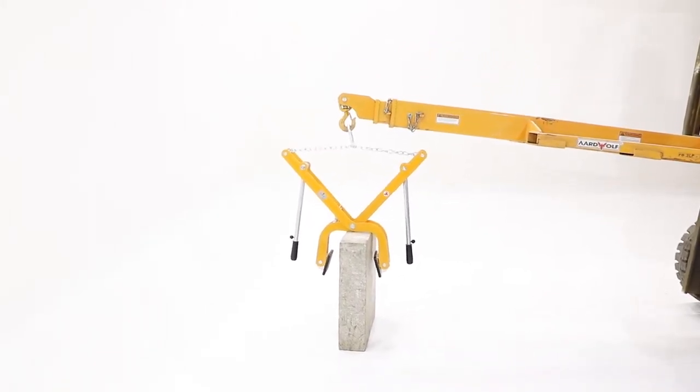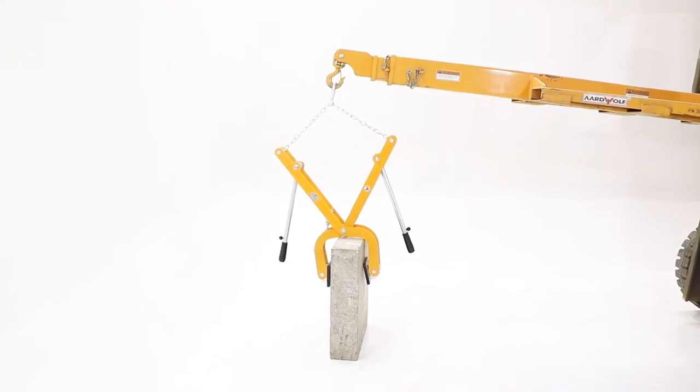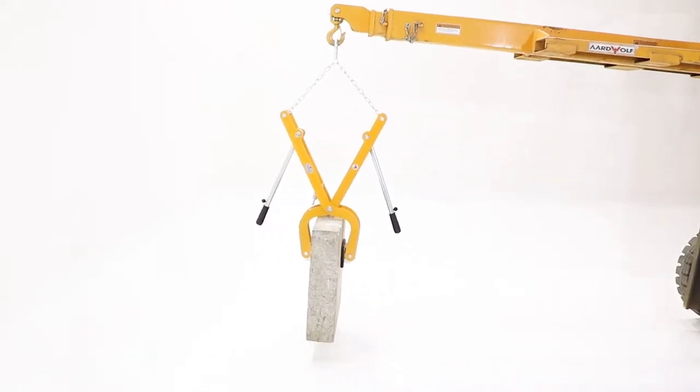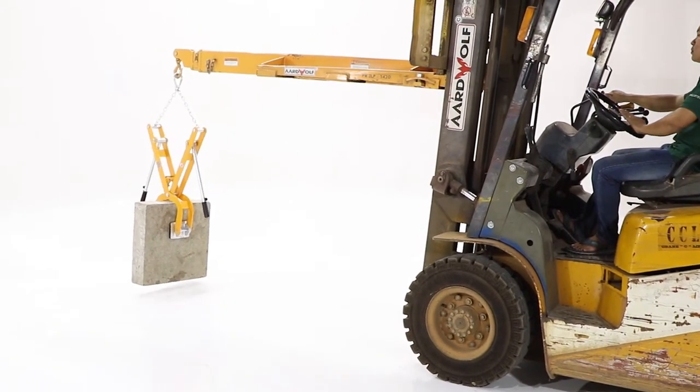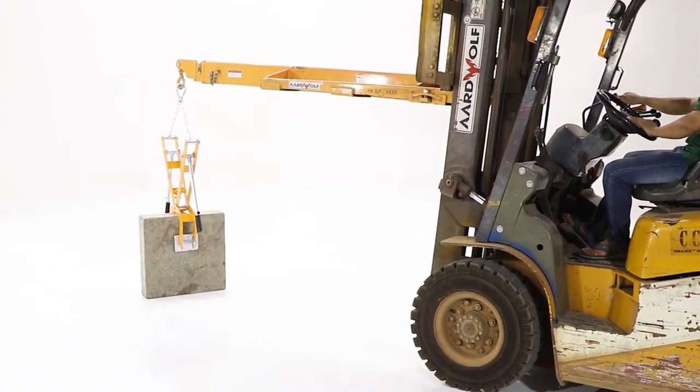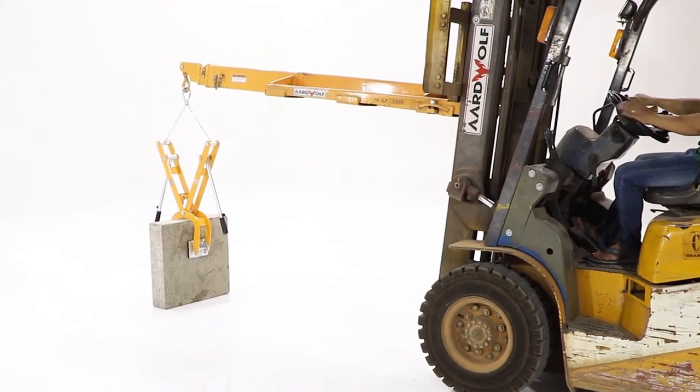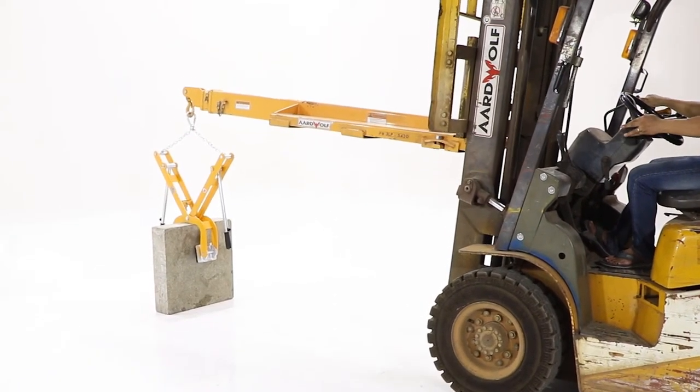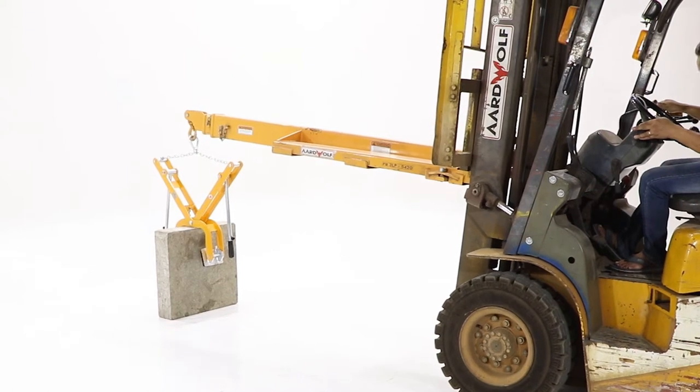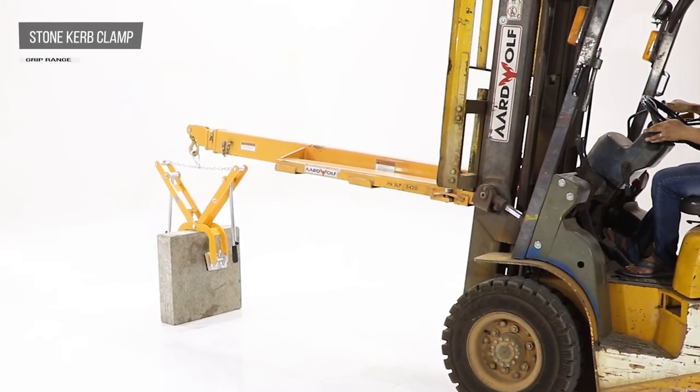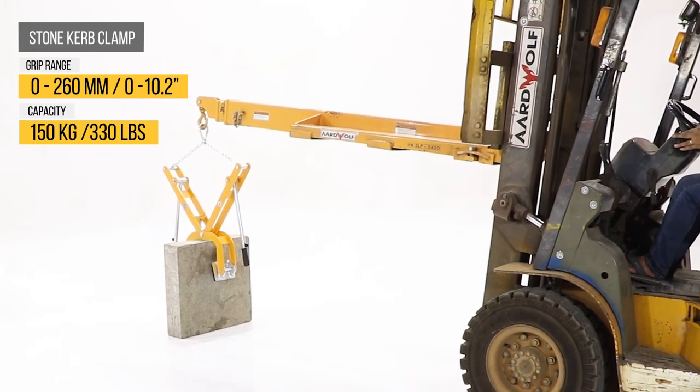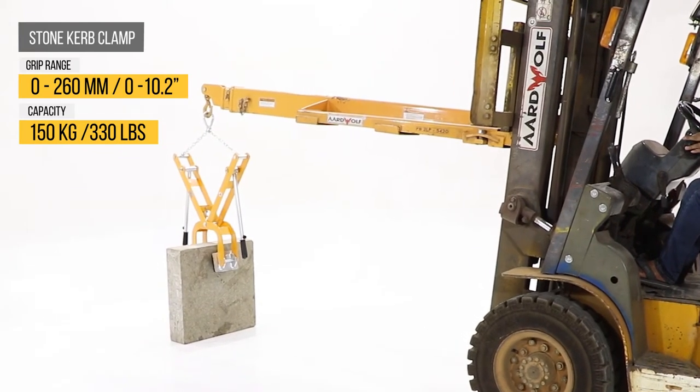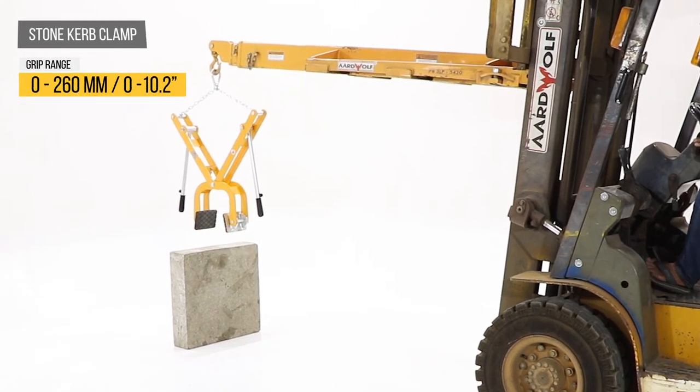The built-in actuator automatically allows the clamp to grip the stone. The load will automatically release once the load has been set down firmly into position. The curb clamp has an adjustable grip range of 0 to 260 millimeters, with a load capacity of 150 kilograms or 330 pounds, but weighs only 24 kilograms or 53 pounds.